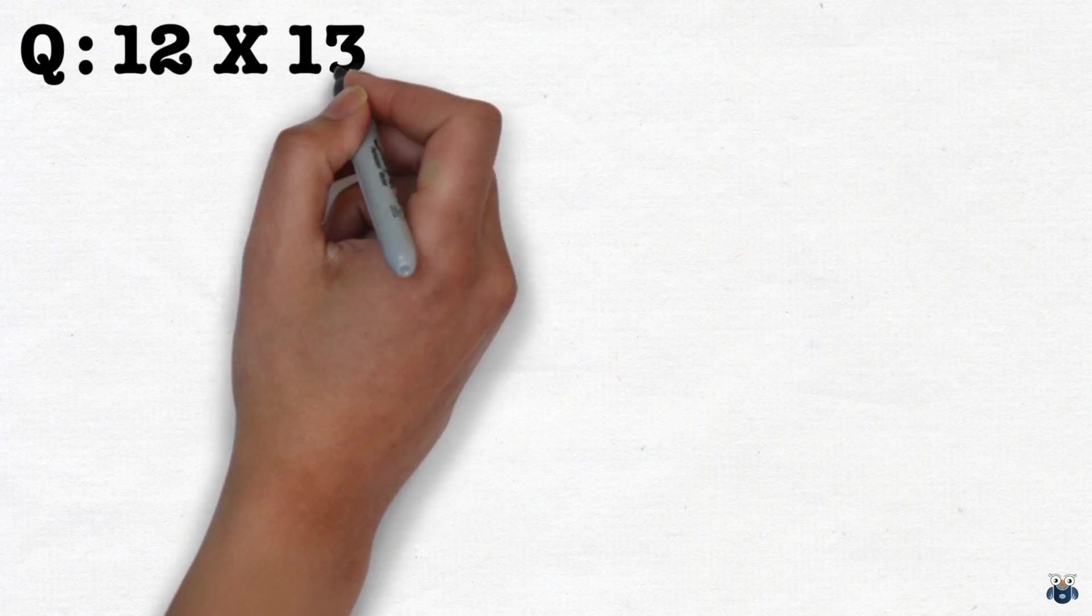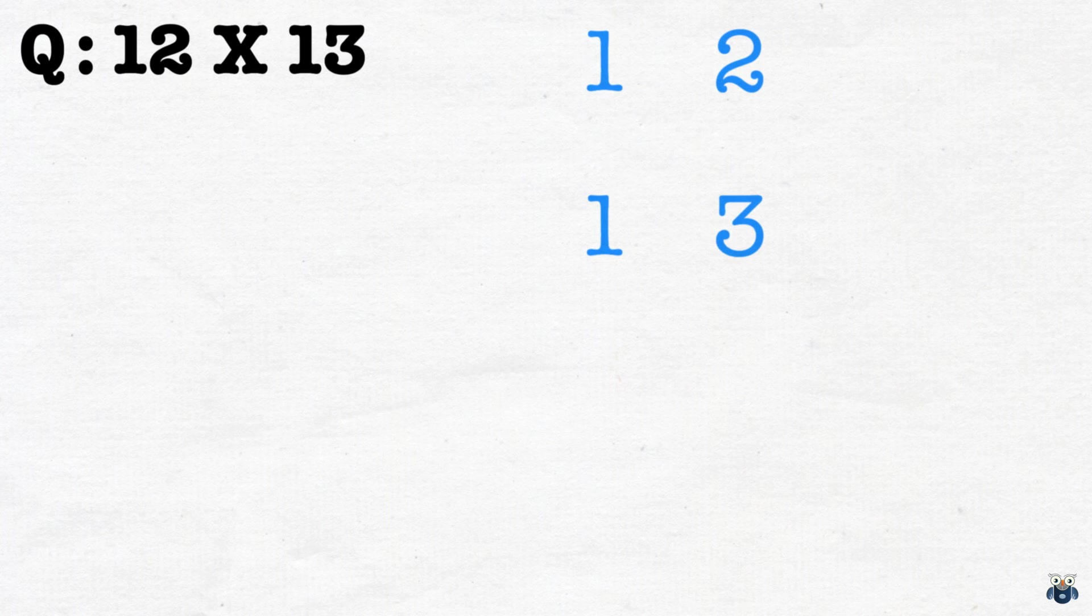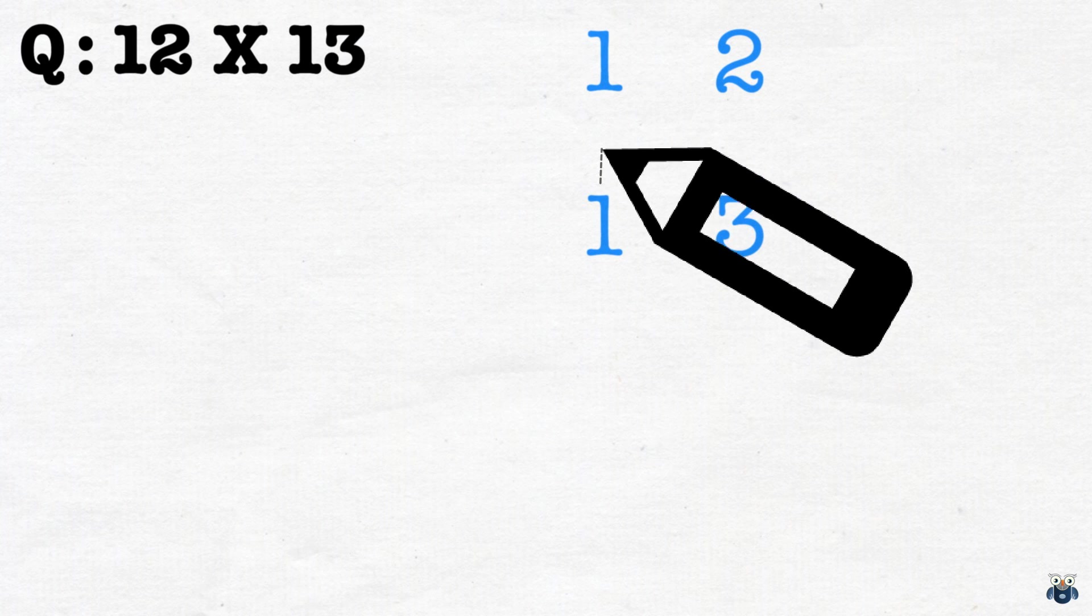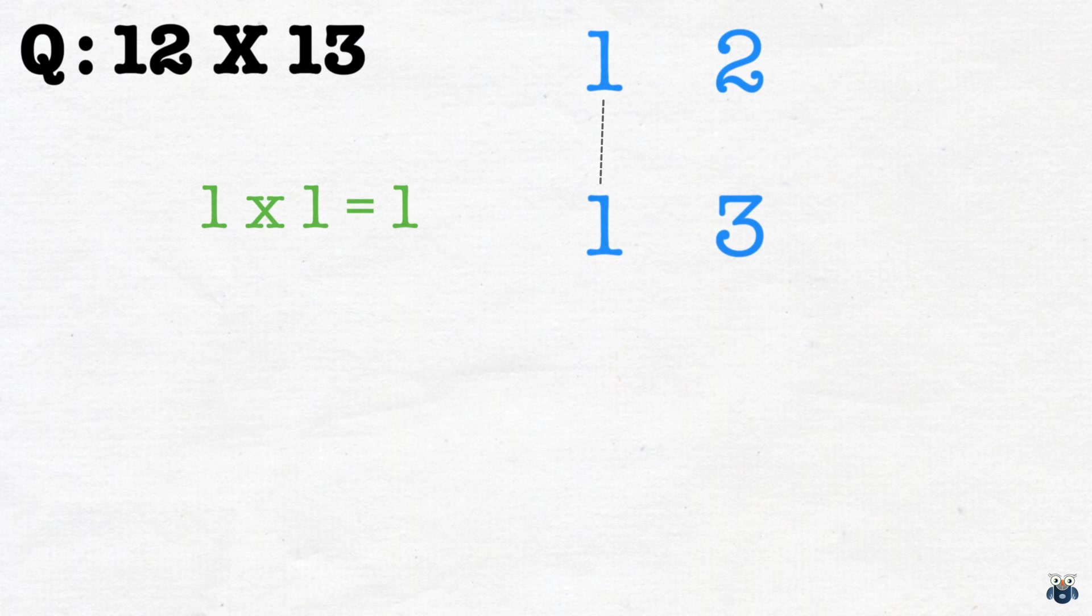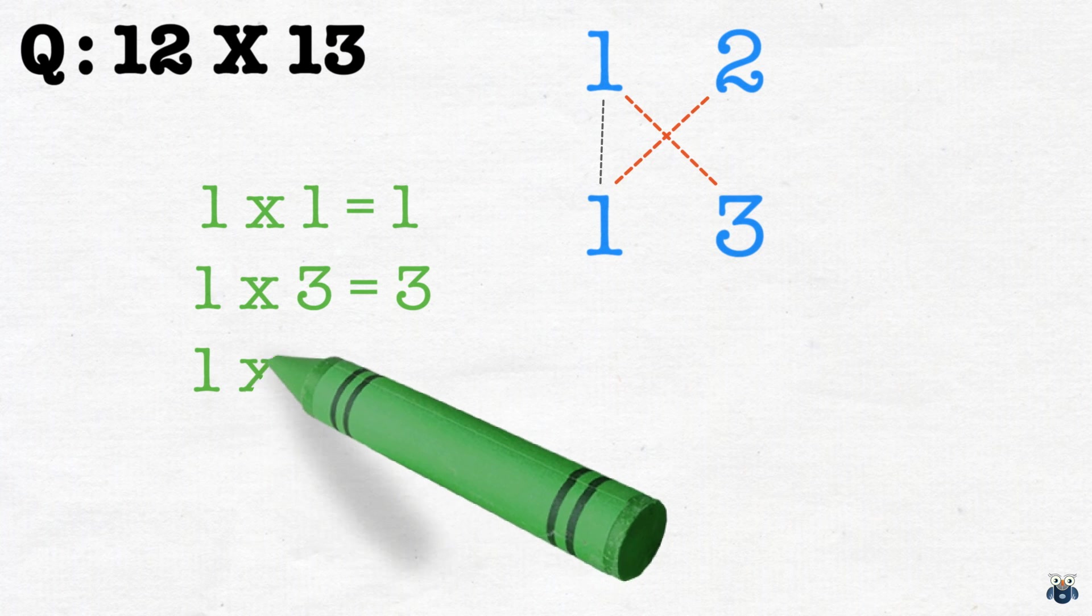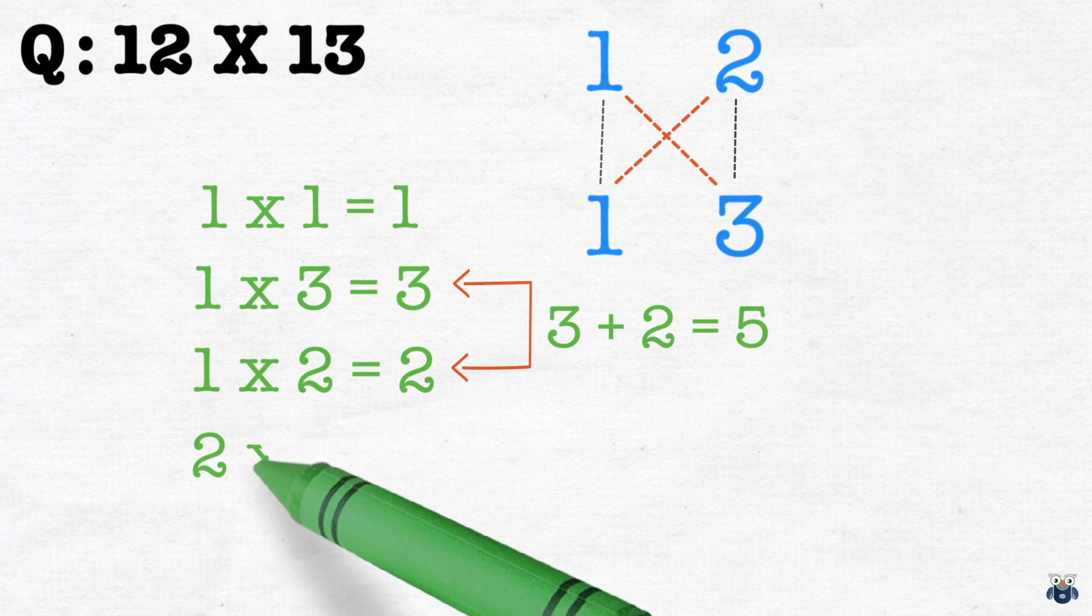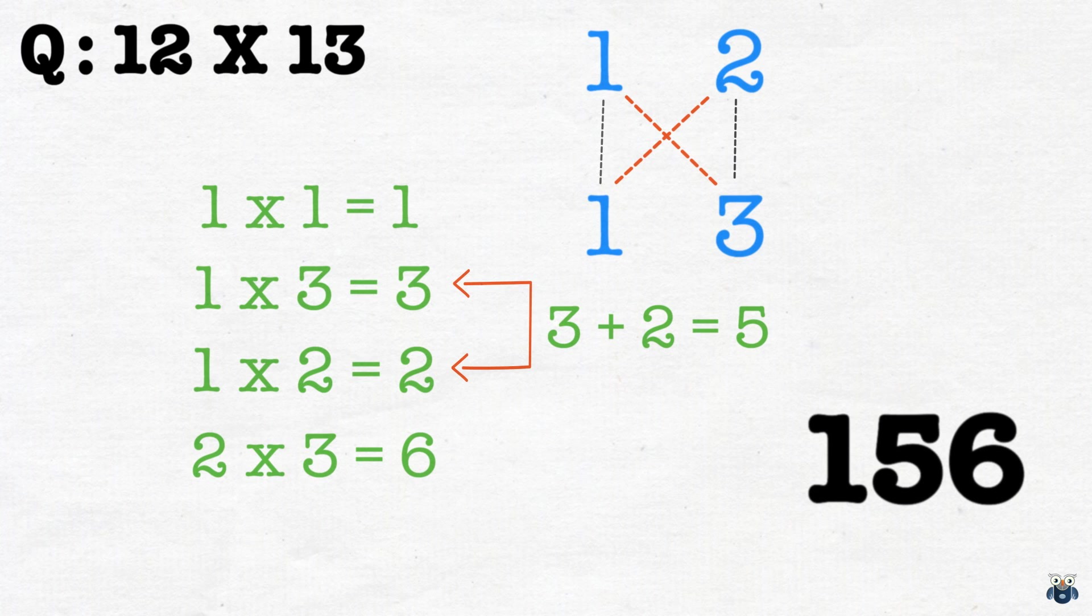What is 12 times 13? We first write down the numbers like this. Starting from the left, we first connect the numbers vertically and find their product. 1 into 1 is 1. Now we move crosswise and multiply the numbers. 1 into 3 is 3 and 1 into 2 is 2. We then add these results. 3 plus 2 is 5. Finally, moving to the extreme right, we connect the numbers vertically and find their product. 3 times 2 is 6 and joining these results, we get 156 which is the correct answer.